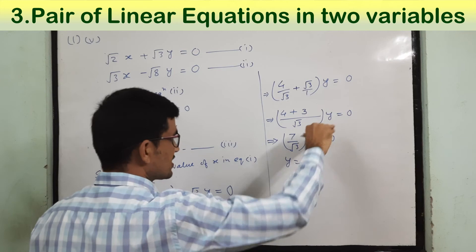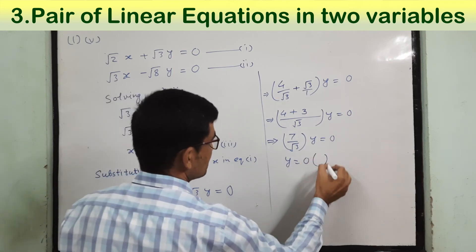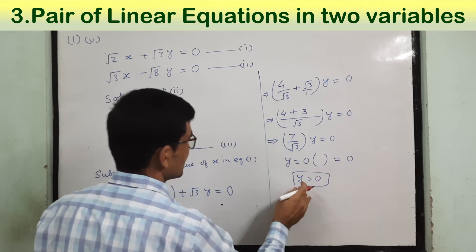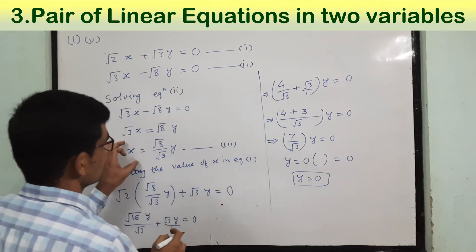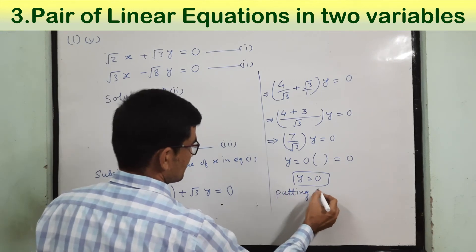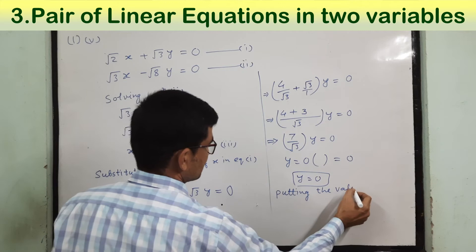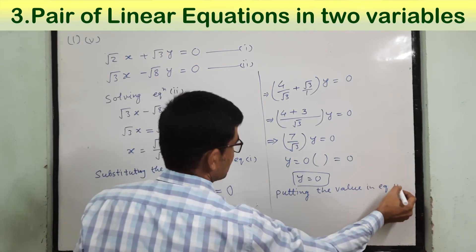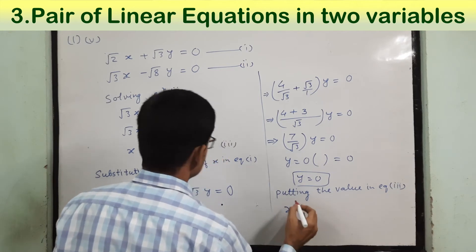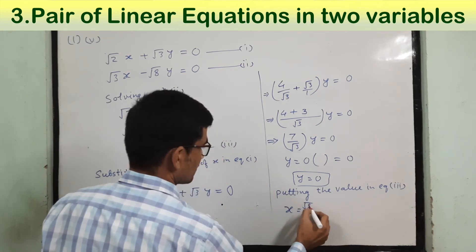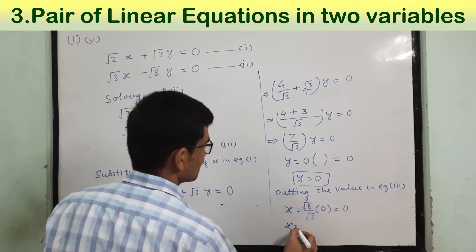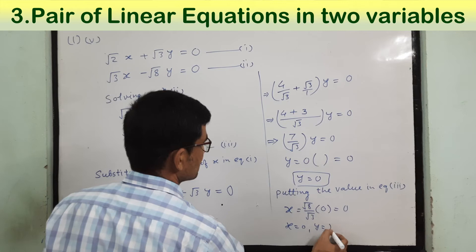Transferring terms to the right side, 0 times whatever equals 0, so y equals 0. When we put this value in equation 3, x equals root 8 by root 3 times 0, which is also 0. So the answer is x equals 0 and y equals 0.